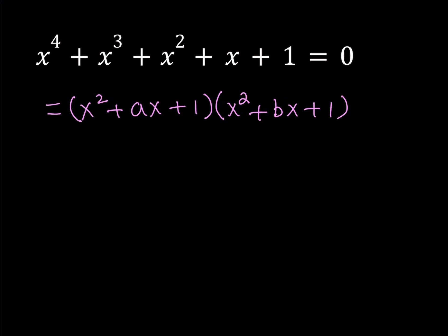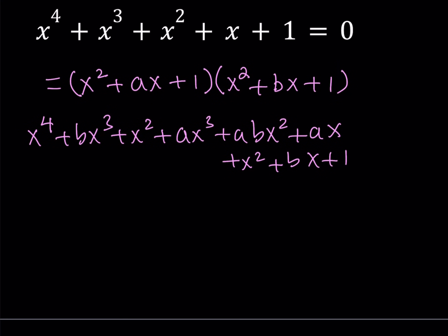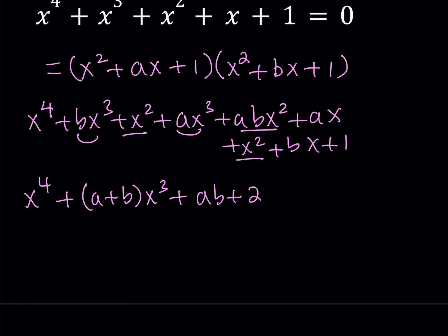Let's go ahead and distribute everything and see what we get. When we distribute, I get x to the fourth power, then bx cubed. Distributing x squared gives ax cubed, abx squared, and ax. Distributing one gives x squared plus bx plus one. Adding up the like terms: x to the fourth, then ax cubed plus bx cubed gives (a plus b)x cubed, and abx squared plus two x squared gives (ab plus two)x squared, and ax plus bx gives (a plus b)x.